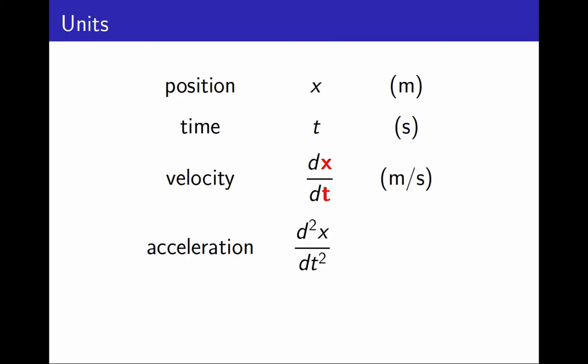Now look at the acceleration, which is the second derivative of x with respect to time. There is one x in the numerator, but two t's in the denominator. The placement of those two's was very important! So we measure the acceleration in meters per second squared. And that is a good advantage of the Leibniz notation in physics, or more generally in science. We can keep track of the dimensions of any quantity we define using derivatives.